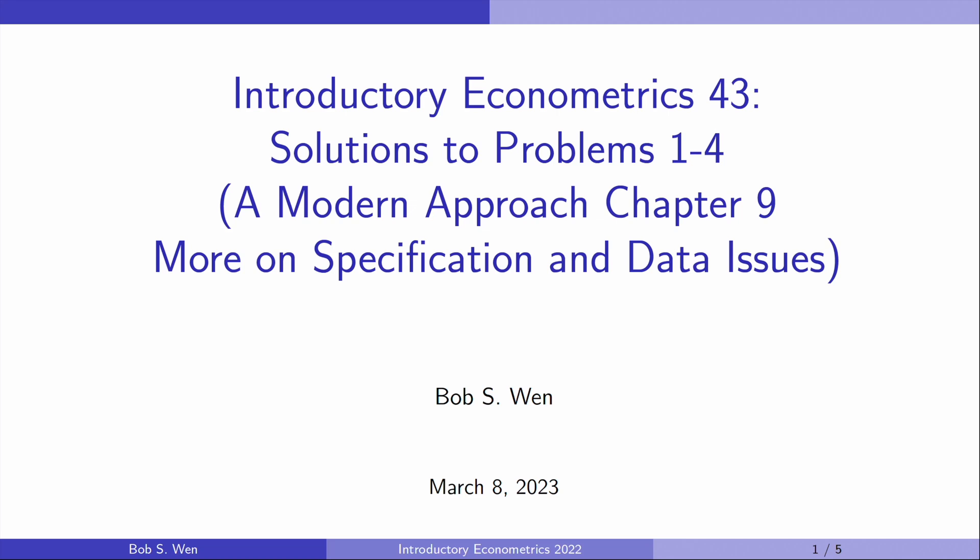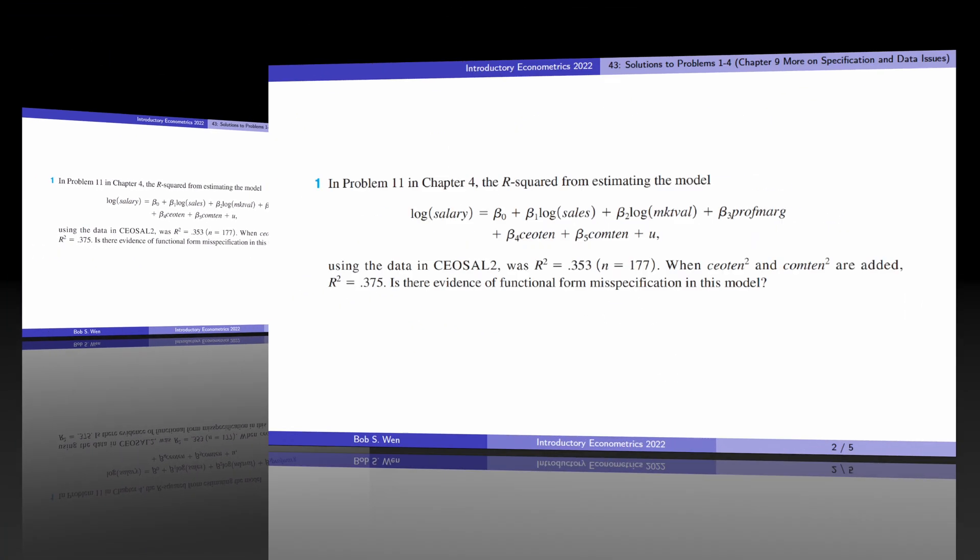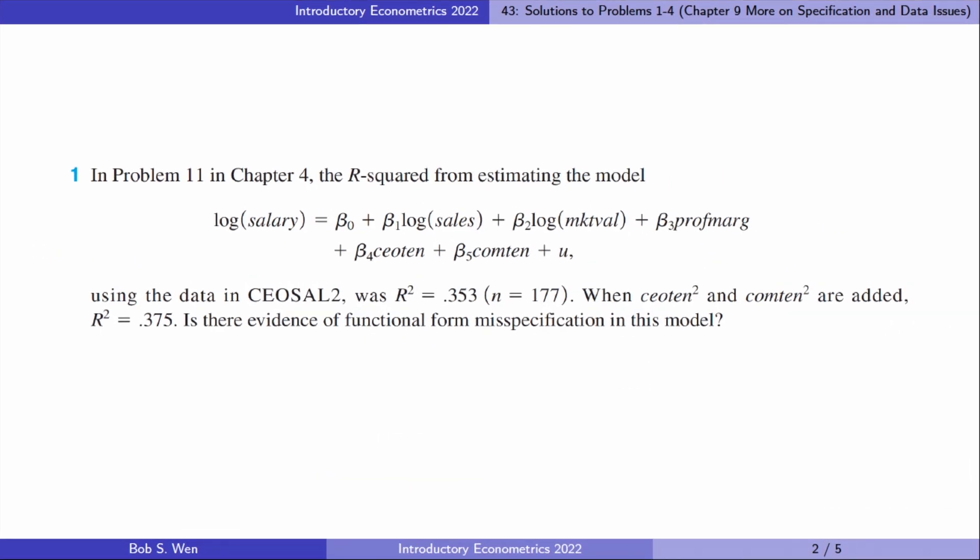Hi, I'm Bob. Let's solve the problems for Chapter 9 about specification and data issues in the textbook Introductory Econometrics: A Modern Approach, the 7th edition by Professor Jeffrey Wooldridge.